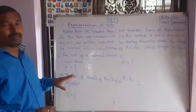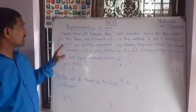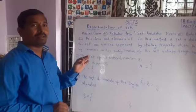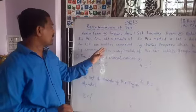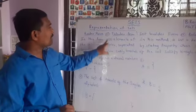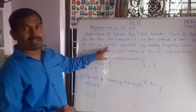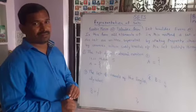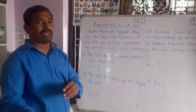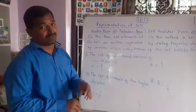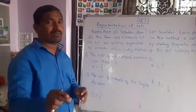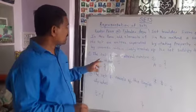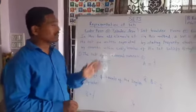Let us discuss roster form or tabular form. In this roster form, all the elements are listed and separated by commas. All elements of the set are written and separated by commas within the curly brackets — just listing the objects and putting commas within the curly brackets. This is called roster form.